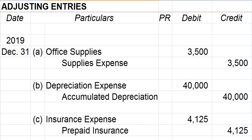Meaning, you do not have to create another set of T-accounts or account ledgers. But in case you do not have a ledger yet for a particular account — because that account name was not used in previous journal entries — then just make a ledger for that account right after the last account ledger you have. Please be reminded that after posting the adjusting entries to the ledger, including writing all the required information, do not forget to fill up the PR column of your journal sheet where your adjustments are recorded.